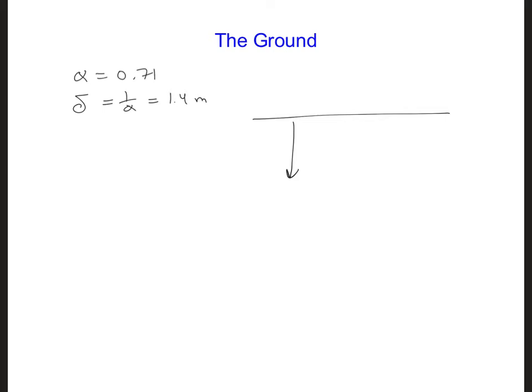say 1.4 meters, will have attenuated by a factor of 1 over e, which is about 36% of the amplitude that the wave has here just below the Earth's surface, the ground surface.